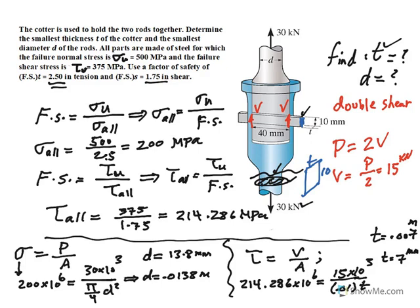In this problem, we have to make sure that the thickness is at least 7 millimeters, and the diameter of this pin is at least 13.8 millimeters. I hope you enjoyed this video. Thank you for watching and listening.